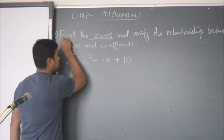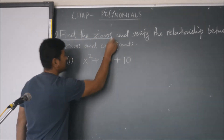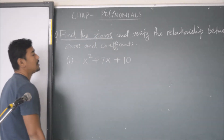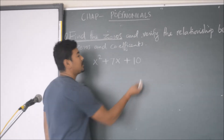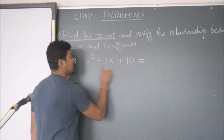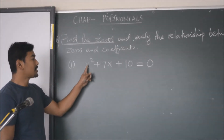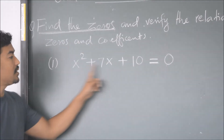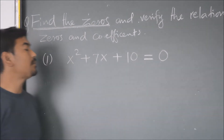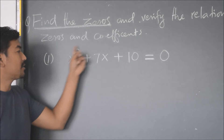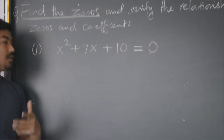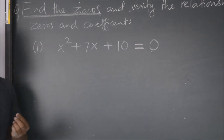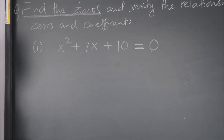We are going to do the first part: finding the zeros of x squared plus 7x plus 10. The first step is to equate the given polynomial to zero. To simplify the left-hand side, one process is middle term splitting. Let us do middle term splitting.